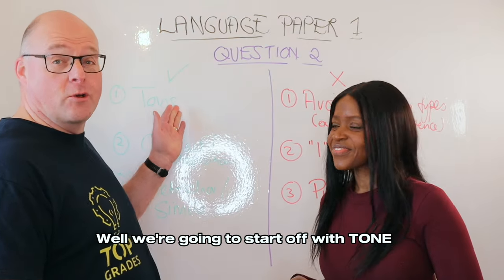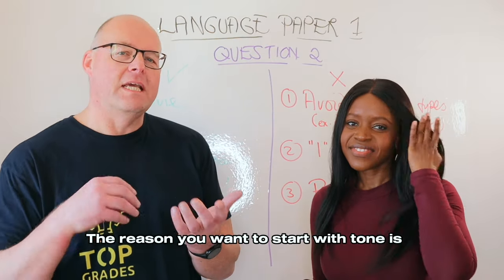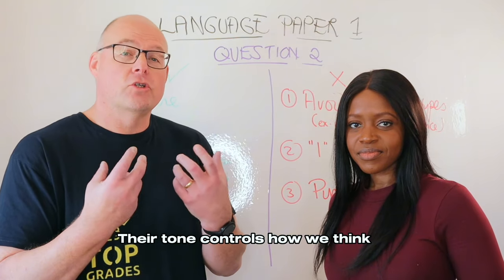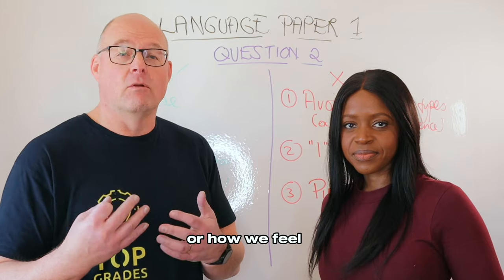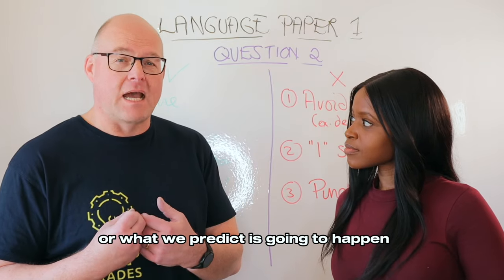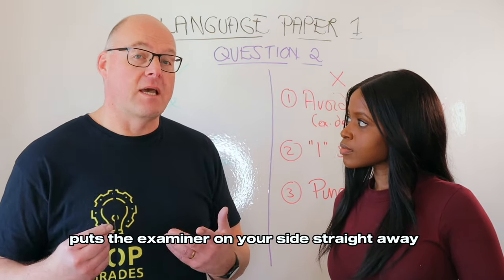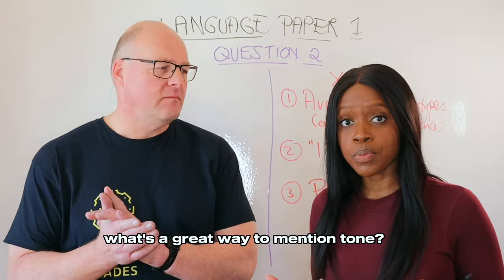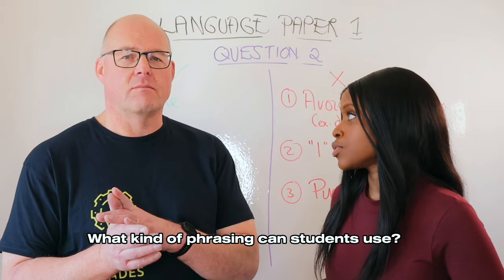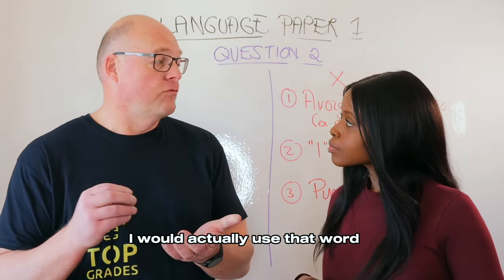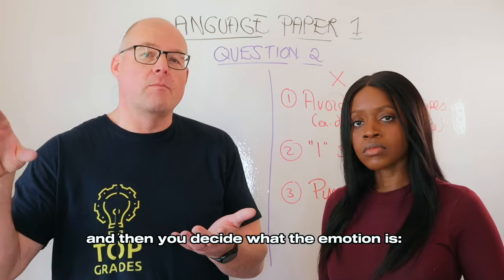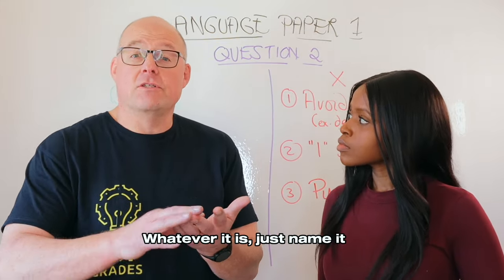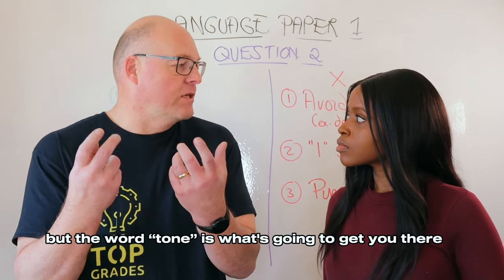We're going to start off with tone. The reason you want to start with tone is it gets you straight into what the author is doing. Their tone controls how we think, how we feel, or what we predict is going to happen. Using that vocabulary puts the examiner on your side straight away. A great way to phrase it: simply say 'the writer's tone is...' and then decide what the emotion is — cynical, excited, aggressive, whatever it is, just name it. The word tone is what's going to get you there.